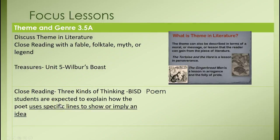You also have theme and genre. We've been talking about theme quite a bit — do a close read with a fable, folk tale, myth, or legend. In Treasures unit five, 'Wilbur's Boast' is a good choice. Discuss theme with kids and do some close reading. You'll want to do close reading with three kinds of thinking with poetry, because you want them to notice specific lines that show or imply an idea. Look at page seven of your overview because it talks about thick and thin questions.